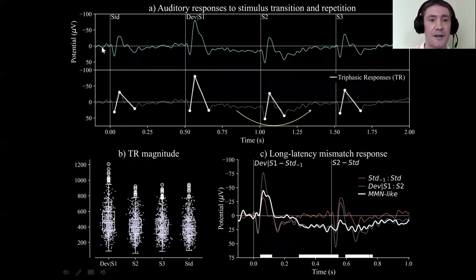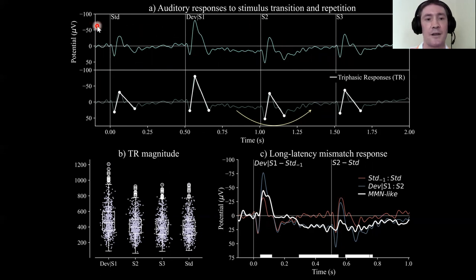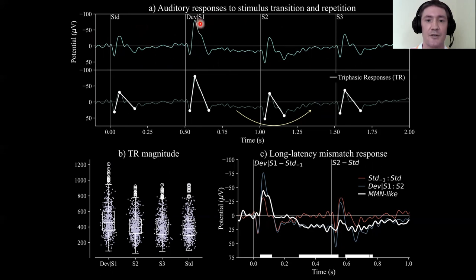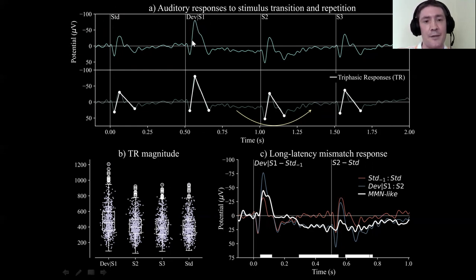Here's the first analysis of the data. The top row shows the ERP from this monkey — a four-stimulus ERP showing the evoked response from the standard, the deviant, and then the second and third repetitions of the deviant. We can see that the deviant does produce an enlarged response, more negative bearing in mind the inverted y-axis. There is also a subsequent long-latency portion of the response, shown using a yellow arrow.